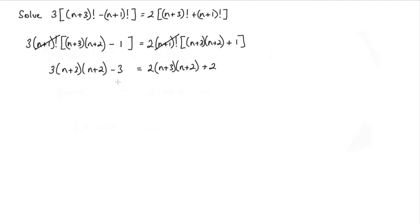Now collecting terms on the left hand side, I've got three lots of this and I have to subtract 2 lots of that. So I'll be left with n+3 multiplied by n+2. And I've got a negative 3 and a 2 here. So subtracting 2 from both sides, I would have minus 5, and that would be equal to 0.